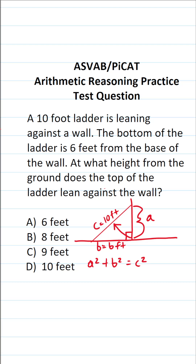Let's plug those values in and solve accordingly. This becomes A squared plus 6 squared equals 10 squared. A squared plus 6 squared is 6 times 6, or 36, equals 10 squared, which is 10 times 10, or 100.